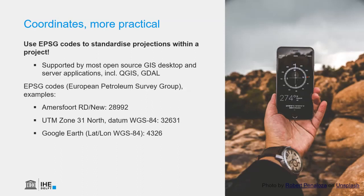If we want to use the UTM zone that covers the Netherlands — zone 31 North with the datum WGS84 — we use the EPSG code 32631. The codes are also a bit standardized: 32 stands for UTM on WGS84, 6 is for the Northern Hemisphere and 7 for the Southern Hemisphere, and then 31 is the zone number.